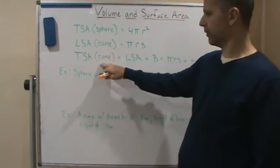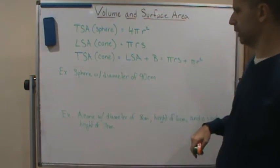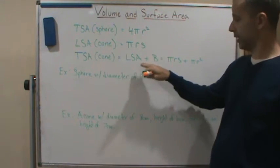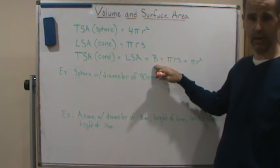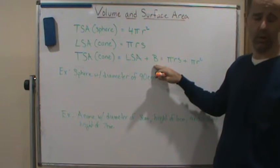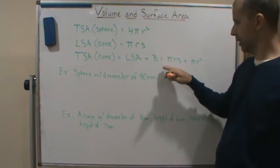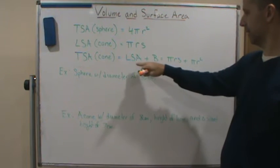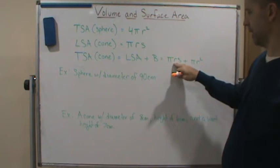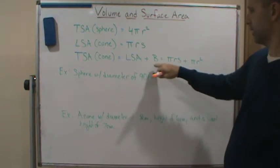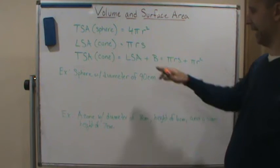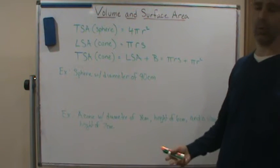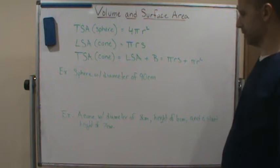Now if you want the total surface area of a cone, then it's lateral surface area plus the area of the base, which is just a circle — pi r squared. So we get lateral surface area, which is pi r s, plus the area of the base, pi r squared, and we add those together to get the total surface area.